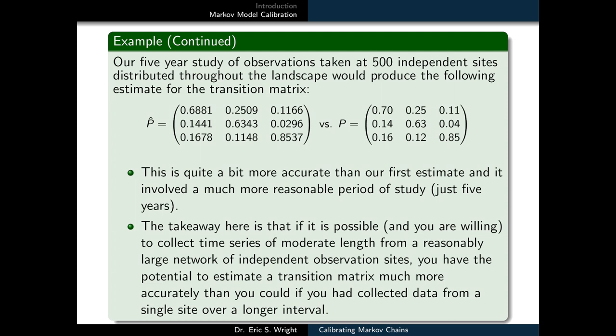The takeaway here is that if it is possible, and you're willing, to collect time series of moderate length from a reasonably large network of independent observation sites, you have the potential to estimate a transition matrix much more accurately than you could if you had collected data from a single site over a longer interval. What we've essentially done here is gone from collecting 50 years worth of single state observations to the equivalent of five years times 500 or 2,500 transition counts. That's what we've bought by working over a network of observation sites, even though it only takes us five years to collect that data.